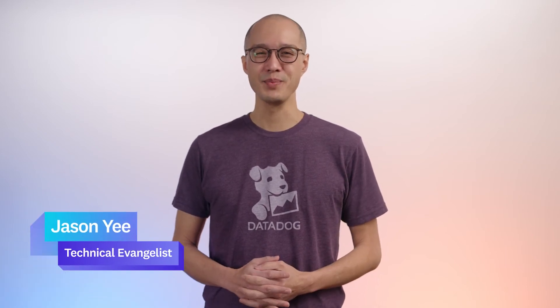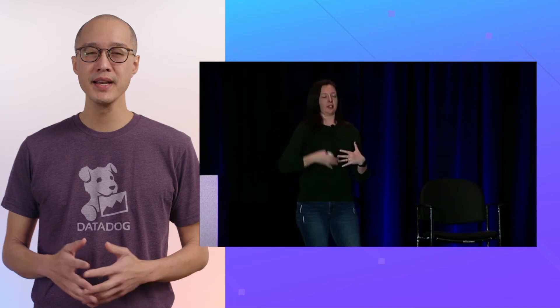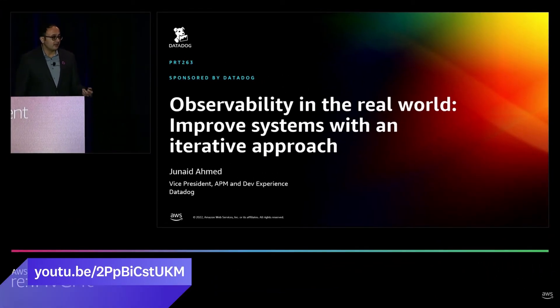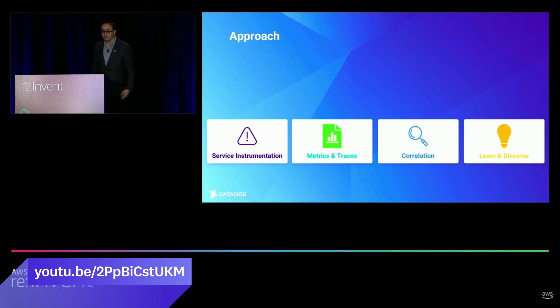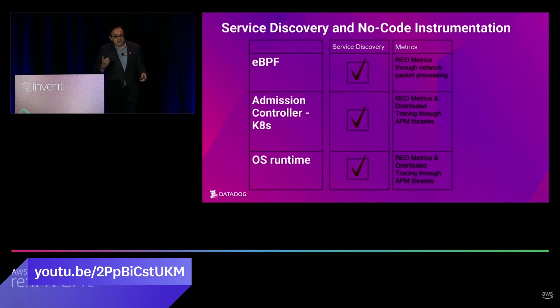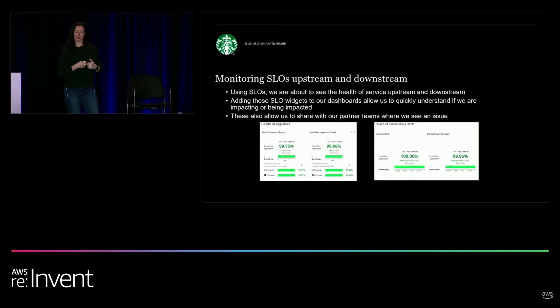This year, Datadog presented three sessions at AWS reInvent. In their talk, Observability in the Real World, Datadog's Junaid Ahmed and Arielle Allen from Starbucks helped attendees understand where to begin when bringing observability into an organization. Junaid detailed an iterative approach, starting small and building upon auto-discovery and auto-instrumentation to simplify the process. Arielle then provided insight on how this was done at Starbucks.